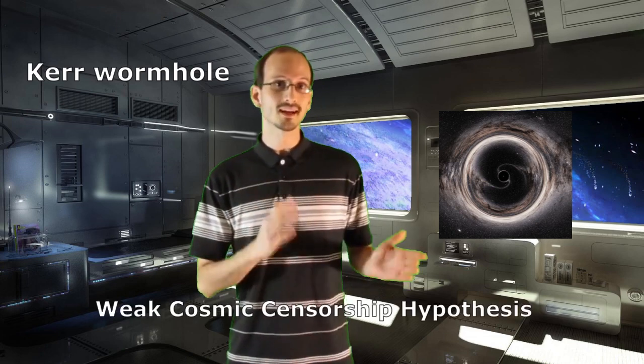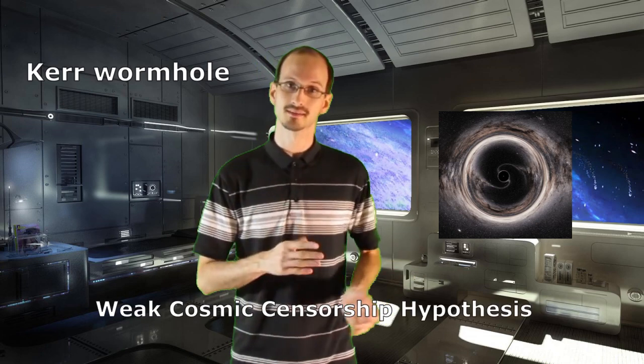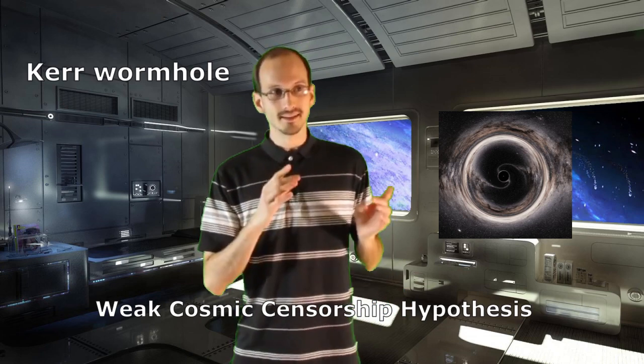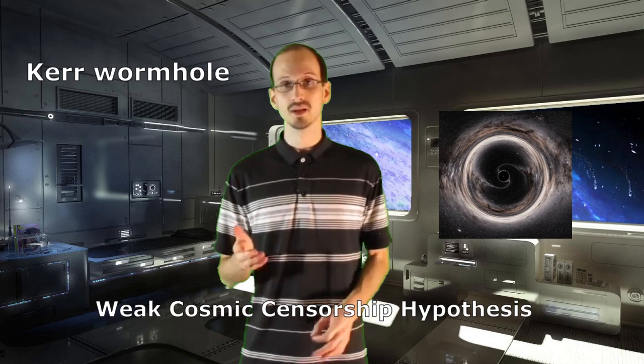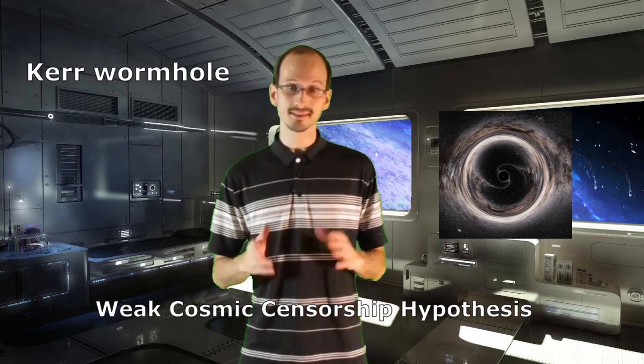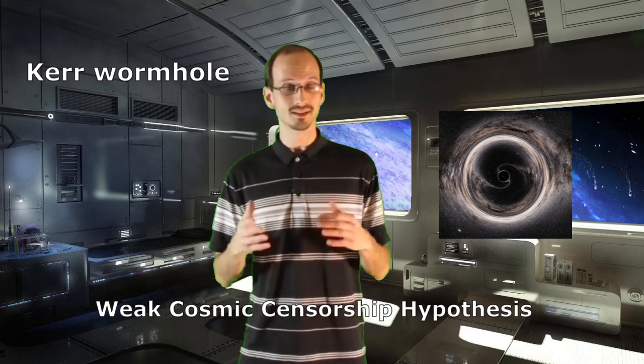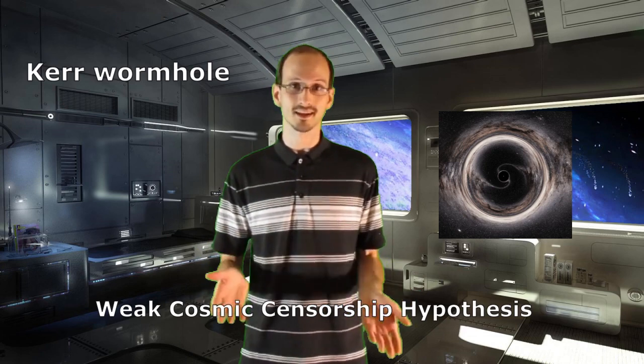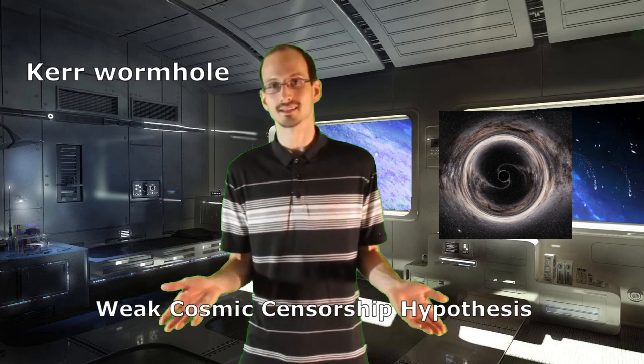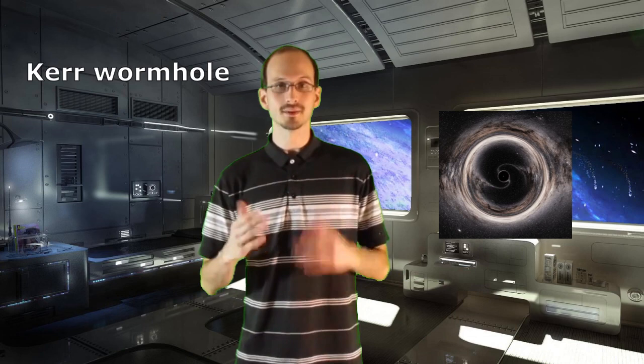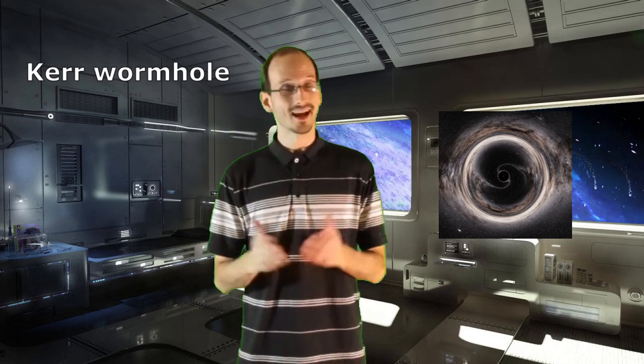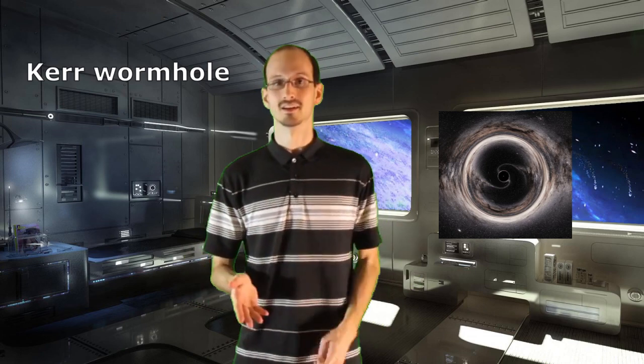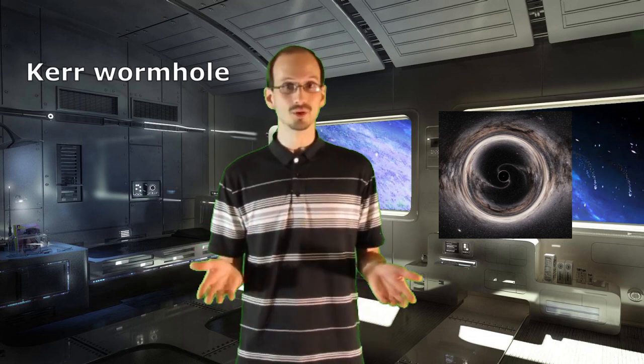It is thought that naked singularities can't exist, based on something called the weak cosmic censorship hypothesis. Which says, naked singularities can't exist. Why not? Well, I did some research, and it seems like the only reason is because physicists don't like the idea of there being naked singularities. So a rotating black hole might be usable as a wormhole if we go through the ring singularity. And if we find a naked singularity, then that could be used as a wormhole too.